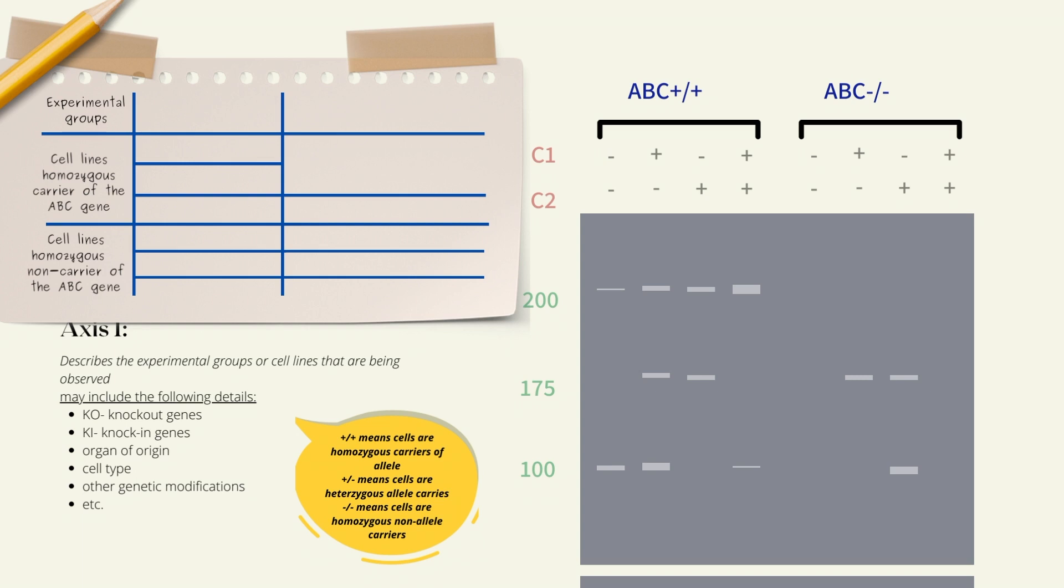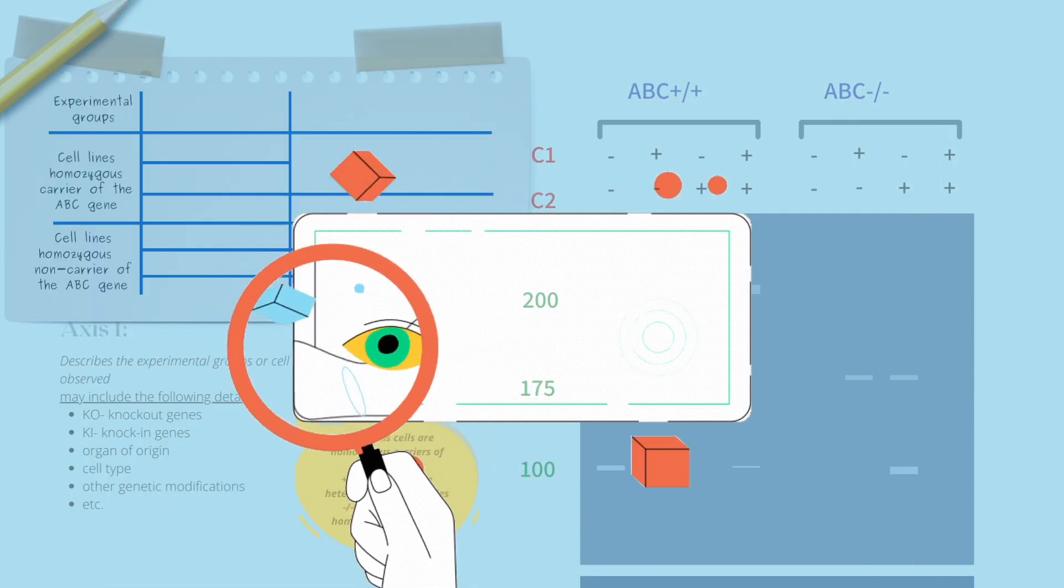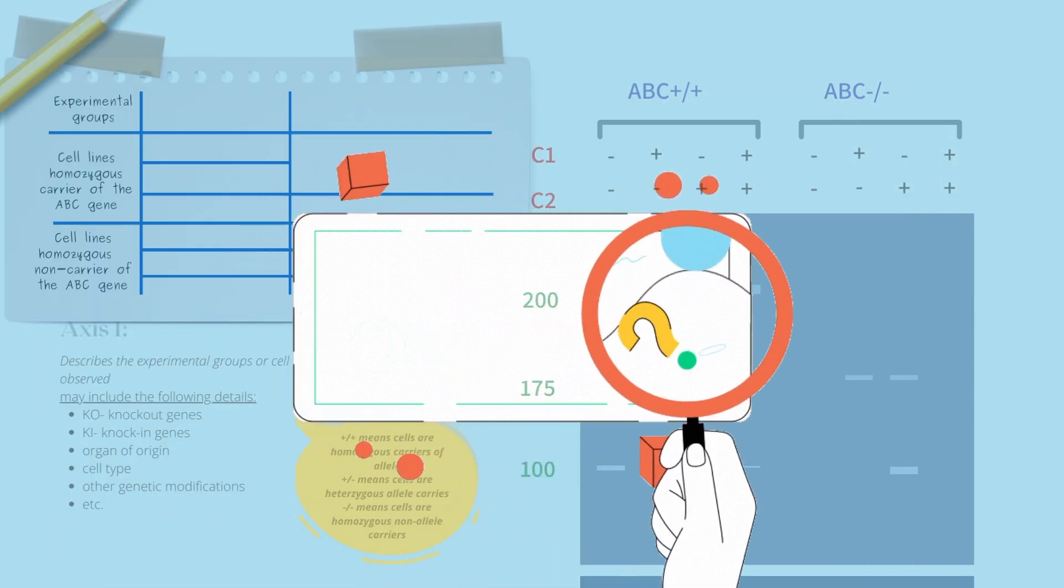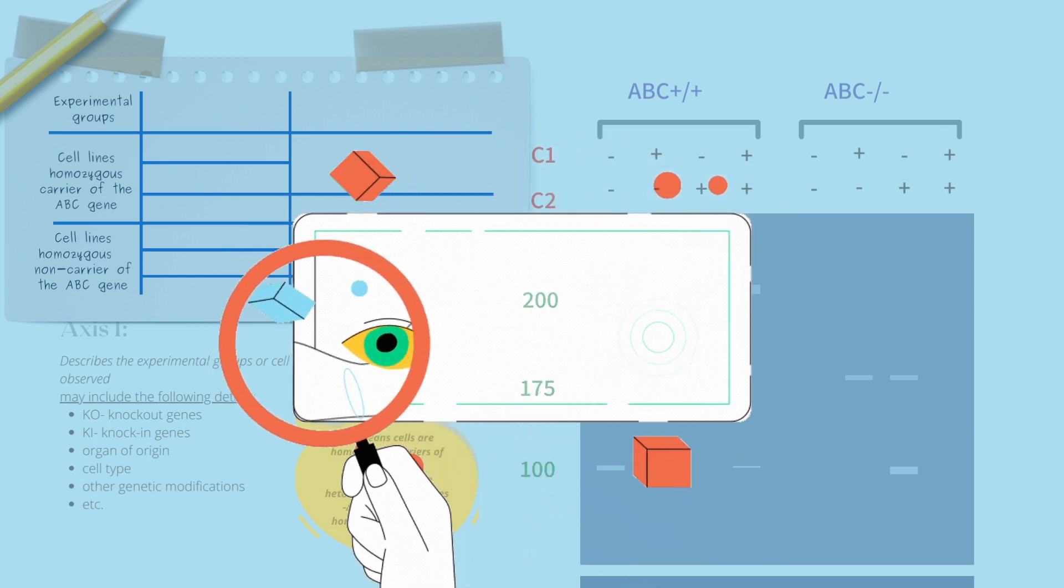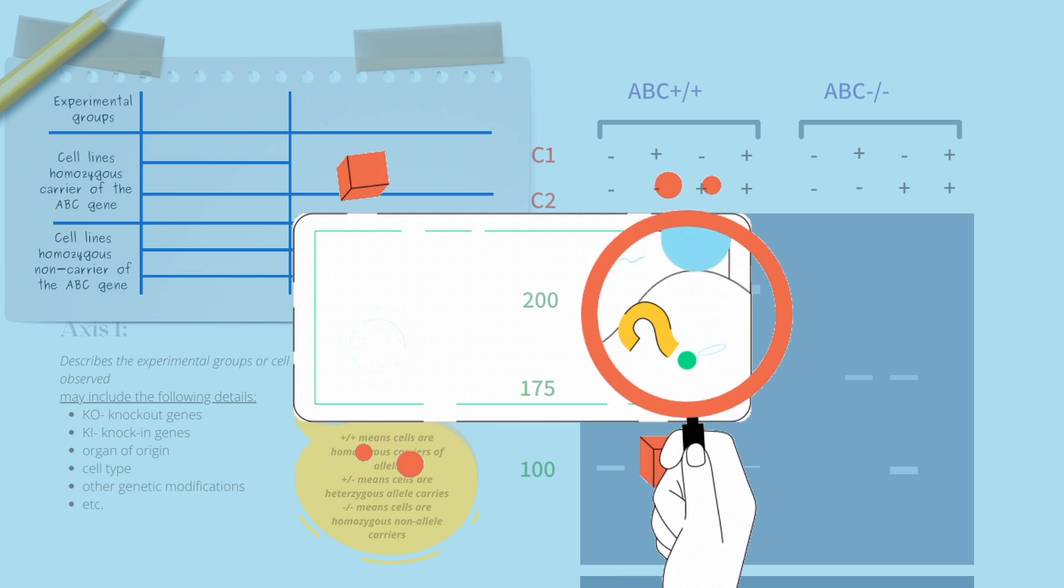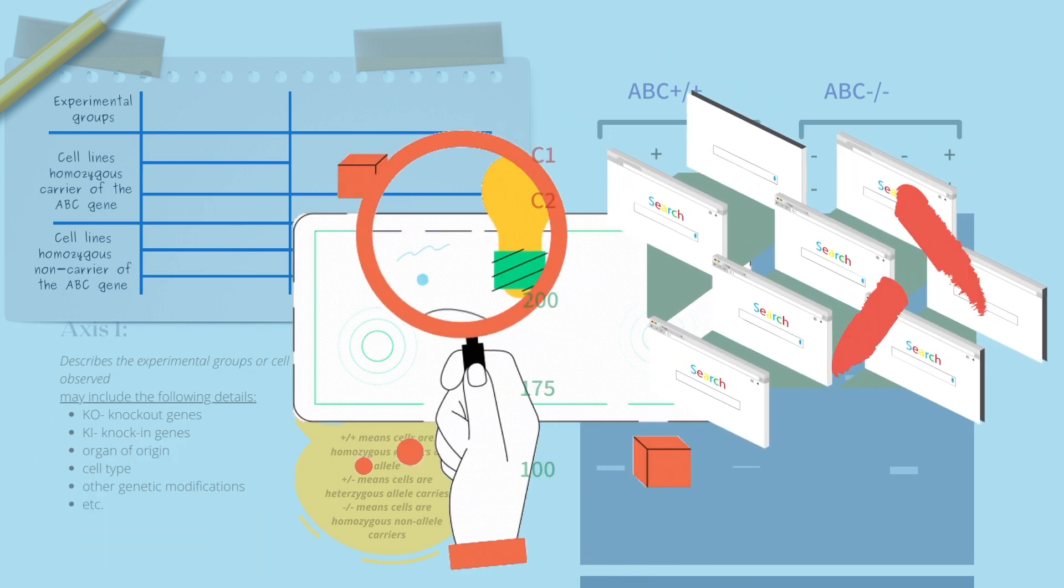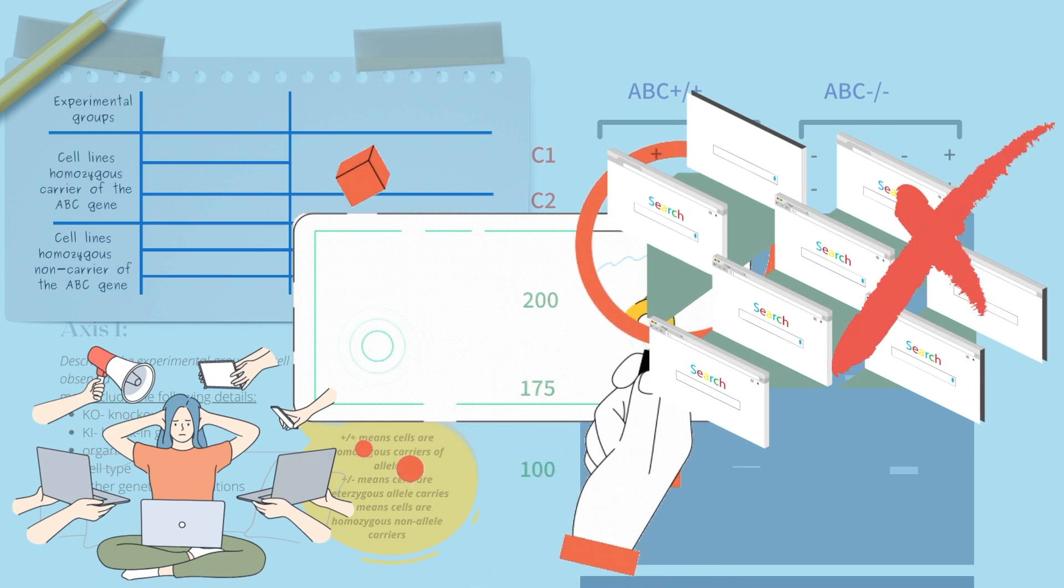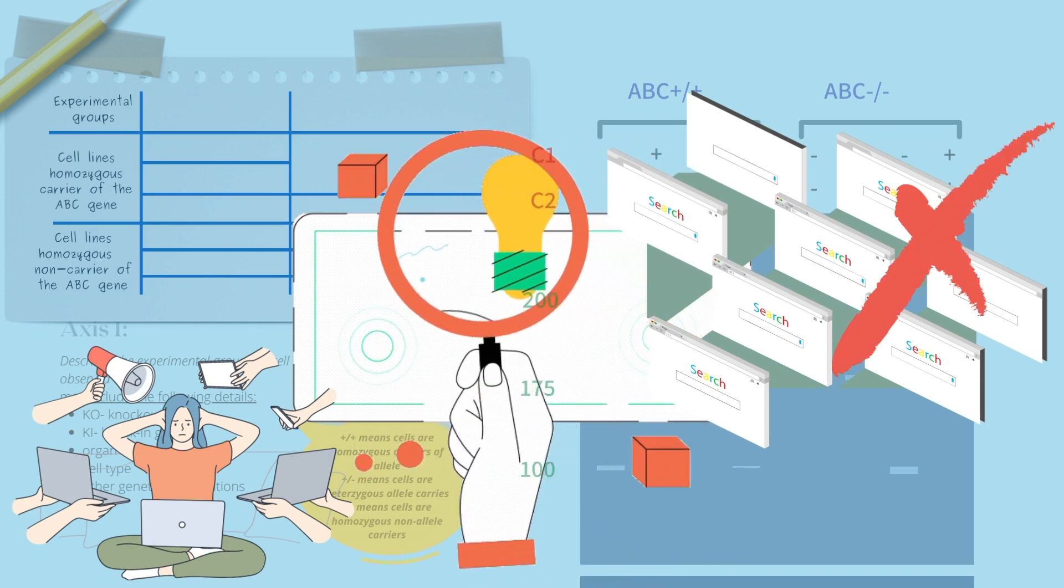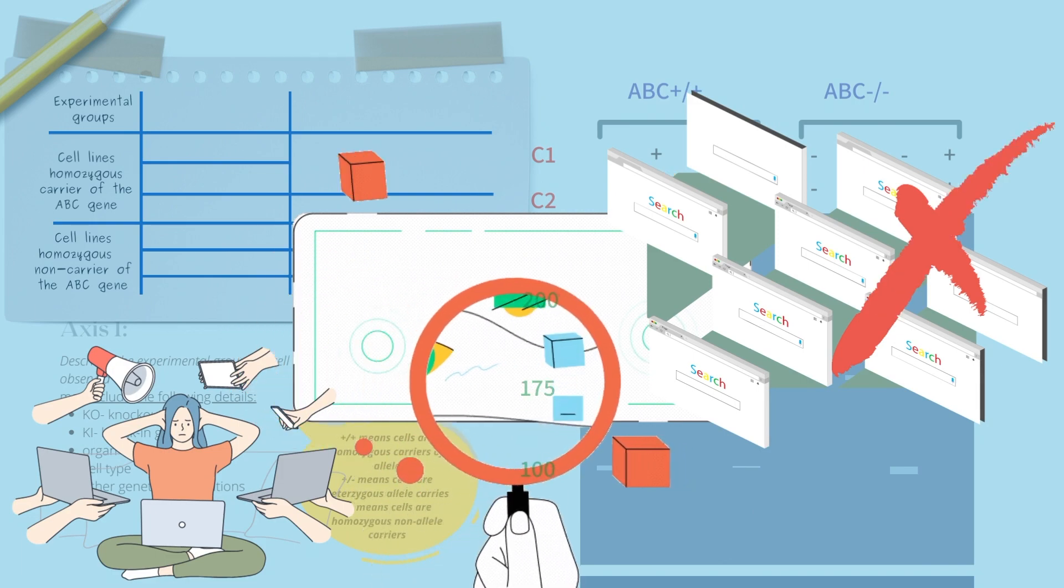A tip for reading axis number one is Google may seem like your best friend, but feeling the need to know every single thing about cell lines and the gene's functions or mechanisms is not required. Do not overwhelm yourself with information because in this case, information can act like a double-edged sword and can block your ability to interpret information and data unbiasedly.